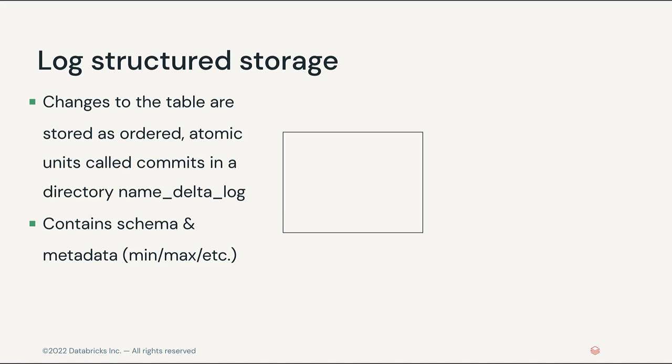When a user reads a Delta Lake table for the first time or runs a new query on a table that has been modified since last read, Spark checks the transaction log to see what new transactions have posted to the table, then updates the end user's table with those new changes. This ensures a user's version of a table is always synchronized with the master record as of the most recent query, and that users cannot make divergent conflicting changes to a table.